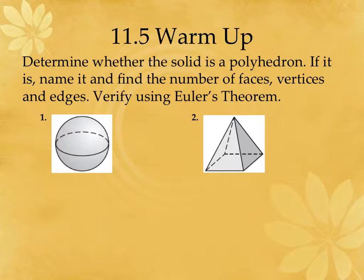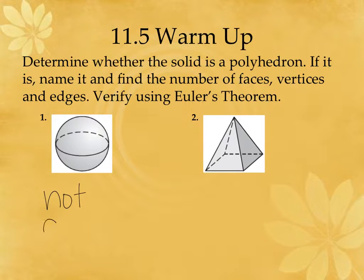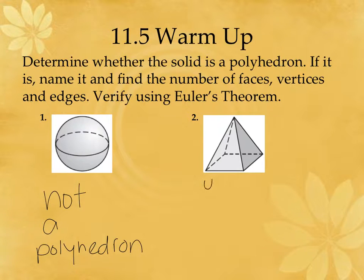How do I know if it is a polyhedron or not? If it's got curves, it's not a polyhedron. So number one is not a polyhedron. Number two is a polyhedron — a square pyramid.